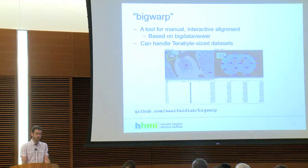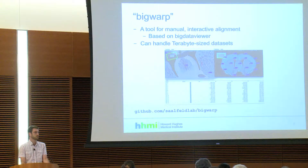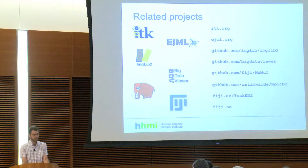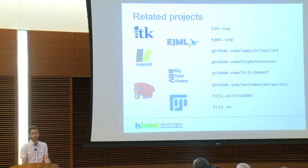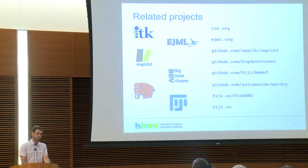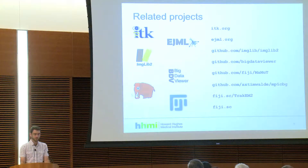I'll also talk a little bit about a tool that we've made that uses this. We're calling it Big Warp for now, and it's based on another cool tool called Big Data Viewer, so it can handle really huge datasets. You can find that on GitHub at solfeldlab.jitk.warp. A little bit of credit: our implementation is based on ITK, we're using EJML for linear algebra, ImageLib2 for image and transformation-related stuff, Big Data Viewer, and Mammut, which is a manual tracking tool by Jean-Yves Tinevez and was a big inspiration for Big Warp. Also MPICBG, TrackEM2, and Fiji, which we're integrating.